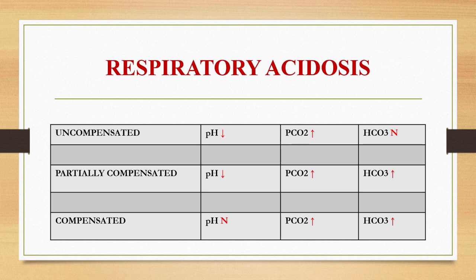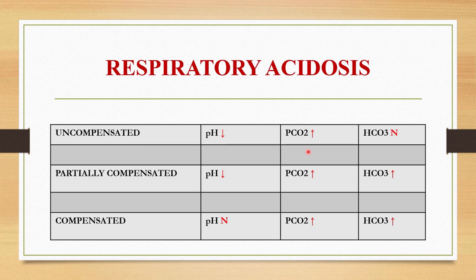As you all know, our human body will try to compensate if there is any imbalance. Likewise, our lungs and kidneys will try to compensate each other in case of any acid-base imbalance. In respiratory acidosis, pH will be less and PCO2 will be high. In uncompensated respiratory acidosis, pH will be less, PCO2 will be high, and bicarbonate level will be normal. If it is partially compensated, pH will be less, PCO2 will be high, and bicarbonate will also be high. And if it is fully compensated respiratory acidosis, pH will be normal, PCO2 will be high, and bicarbonate will also be high.